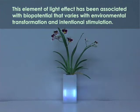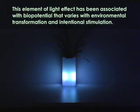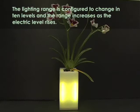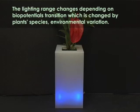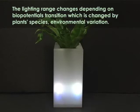The settlement of the light effect has been associated with biopotential that varies with environmental transformation and intentional stimulation. The lighting range is configured to change in 10 levels, and the range increases as the electric level rises. The lighting range changes depending on biopotential's transition, which is changed by plant species and environmental variation.